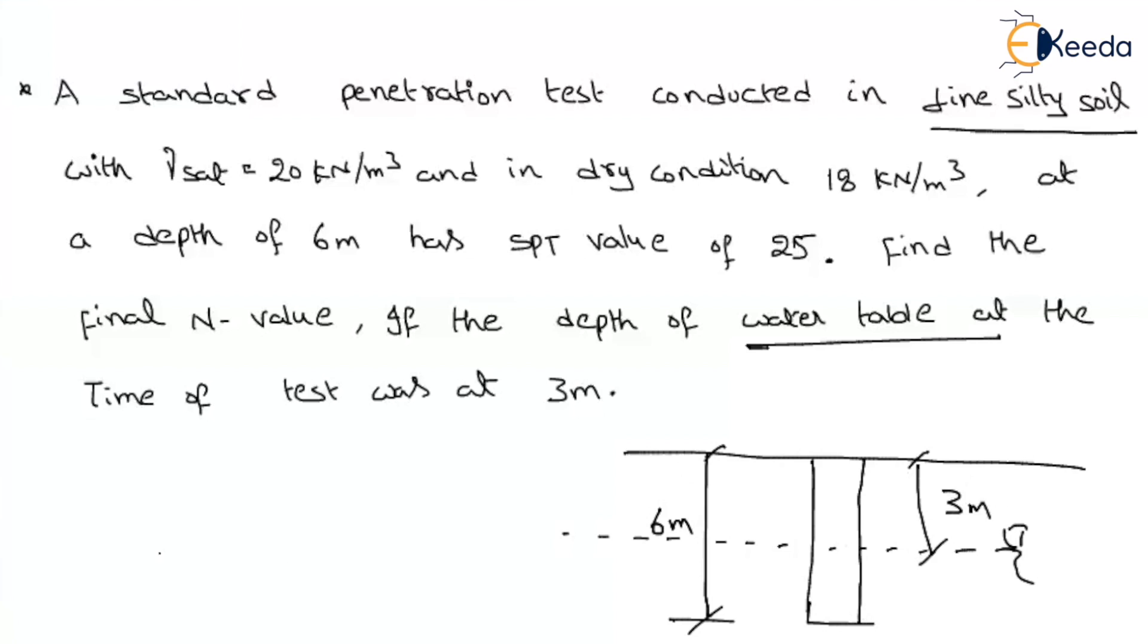First we have to assume it is the observed value. What is the observed value? N0 that will be given as 25. If you remember how many corrections are there? We are having two corrections. One is overburden pressure and second one is pressure correction due to water table. Let us see the first correction.